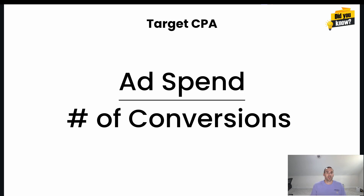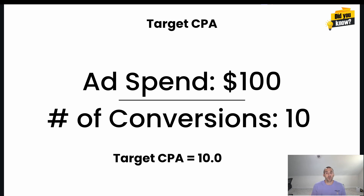Now that we know what target CPA is, let me show you the formula for figuring out your cost per acquisition. To find your CPA, take your ad spend and divide it by the number of conversions. For example, if you spent $100 and generated 10 conversions, your CPA would be $100 divided by 10, giving you a CPA of $10. Your CPA is the actual result; your target CPA is the target you want to aim for.